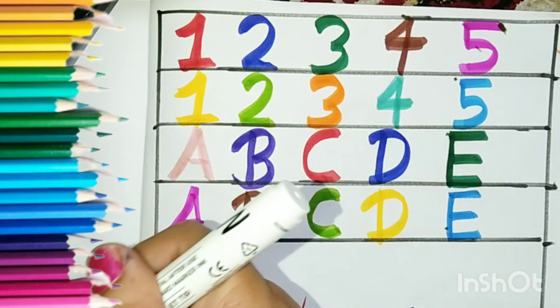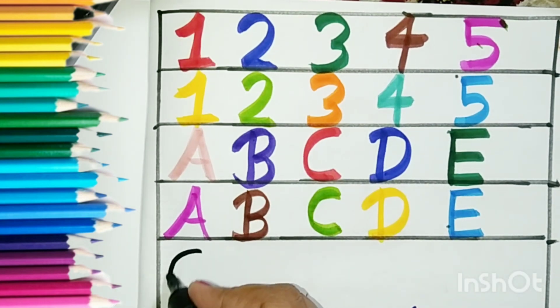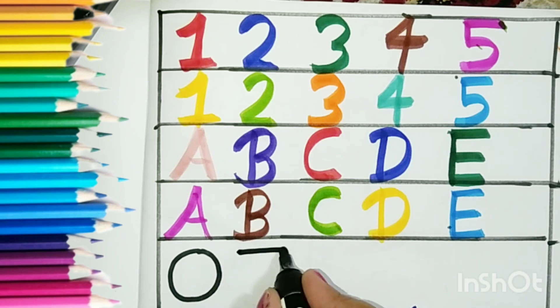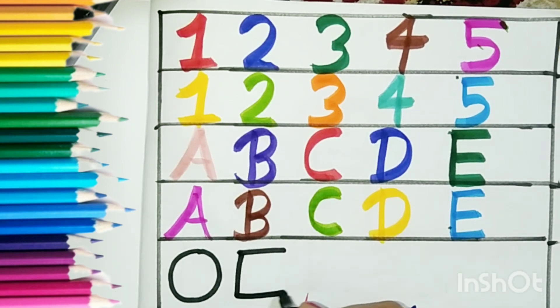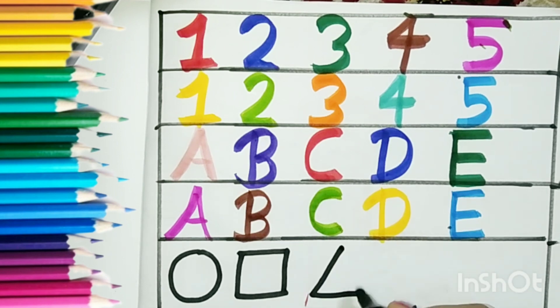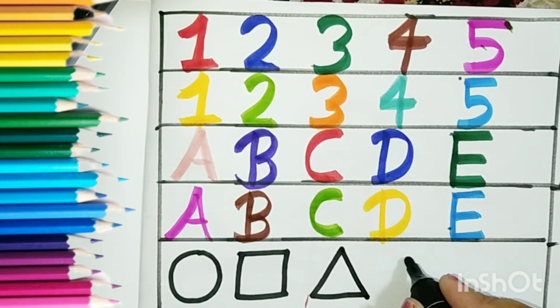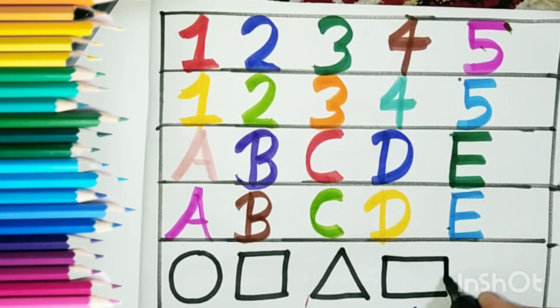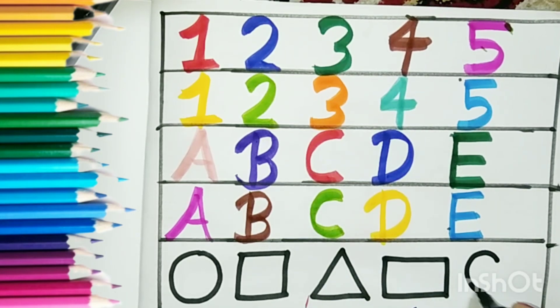Now let us draw the shapes. Circle. Circle. Square. Triangle. Rectangle. Now this is a heart.